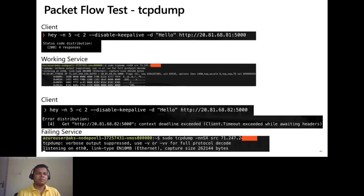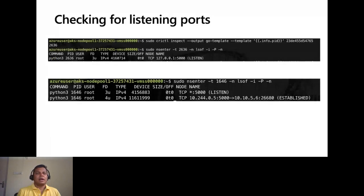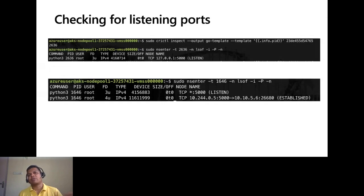We can also use tcpdump for the same scenario to dump out the traffic between client and server. Using sudo tcpdump with the specified command we get the dump of the TCP traffic and analyze it. We could also use cri-ctl to check whether the listening ports are properly mapped to the required port being accessed from outside. Another utility is sudo nsenter, which tells us whether connections can be established from outside to inside the cluster. All these commands are run from one of the individual agent nodes.